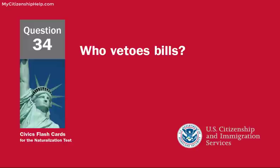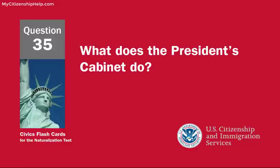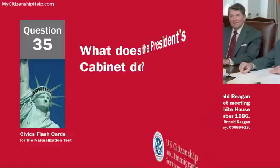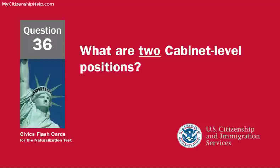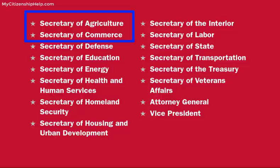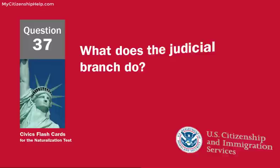Who vetoes bills? What does the president's cabinet do? Advises the president. What are two cabinet level positions? Secretary of agriculture, secretary of commerce. What does the judicial branch do? Reviews laws.